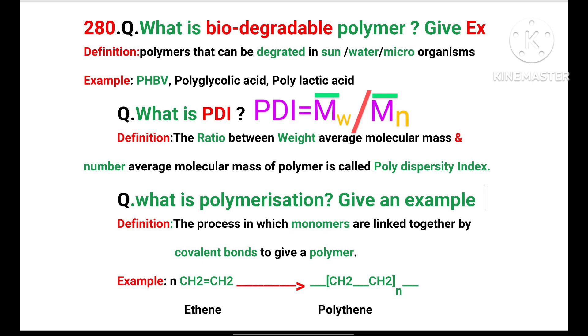The ratio between weight average molecular mass and number average molecular mass of a polymer is called polydisparity index, simply known as PDI.